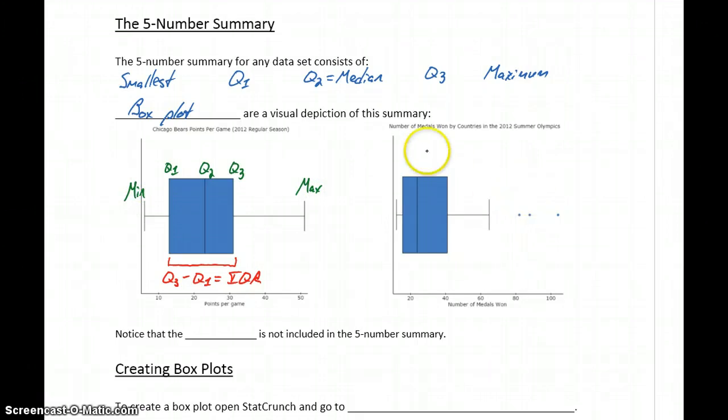The second box plot that we have is a similar idea. We still have the box representing the interquartile range, we have the fences extending out, but now we have these breaks, or we have a break here, and then these three separate dots. So here we're graphing the number of medals won by countries in the 2012 Summer Olympics.